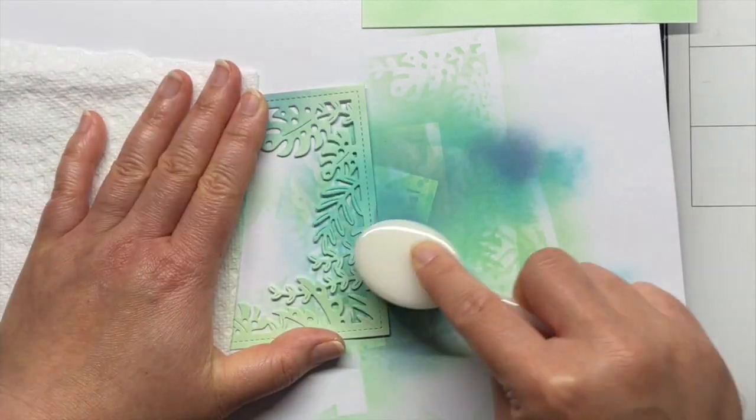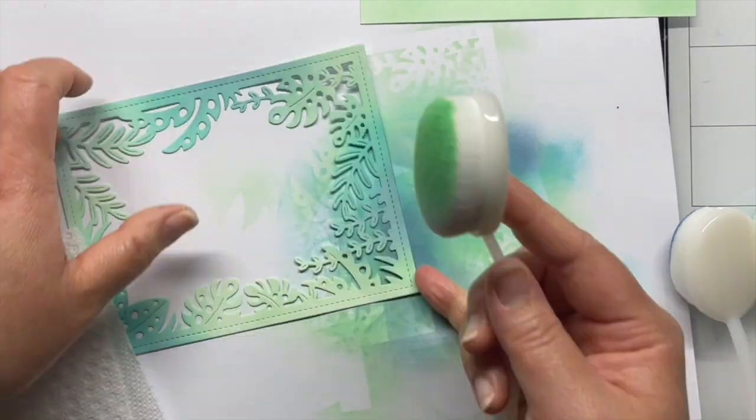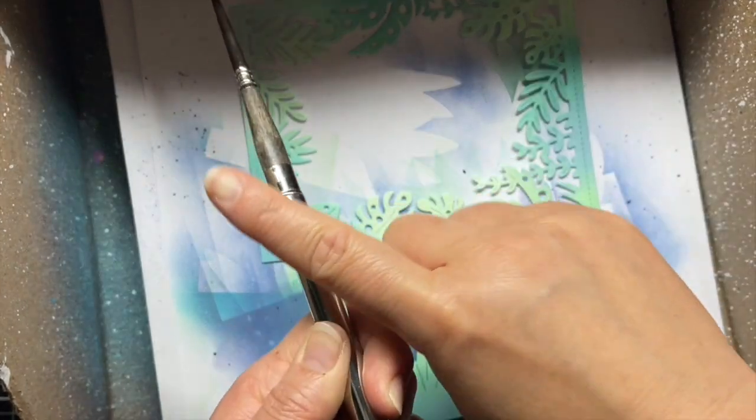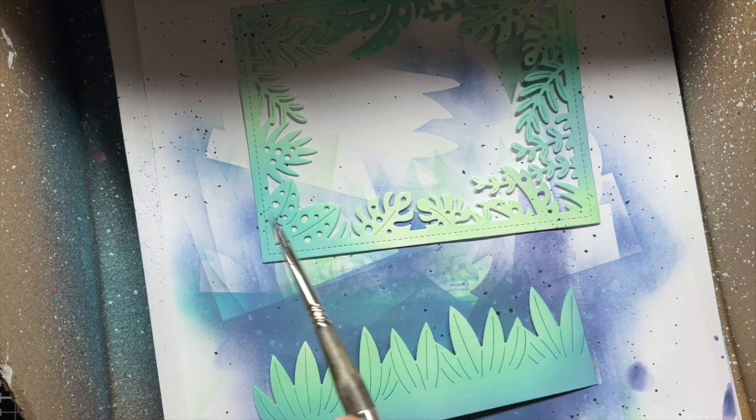Off camera, I blend a little faded jeans and Chipped Sapphire Distress Oxide ink onto the Rainforest cardstock. Once they were dry, I splattered the panels with water and distress oxide ink and then set them aside to dry completely.